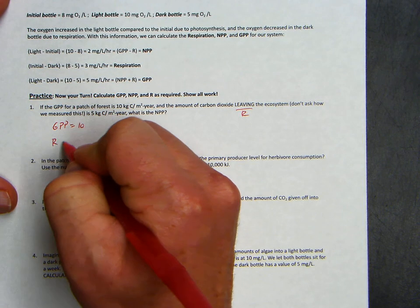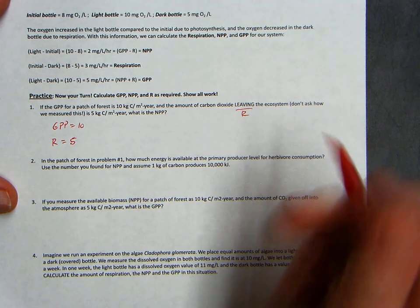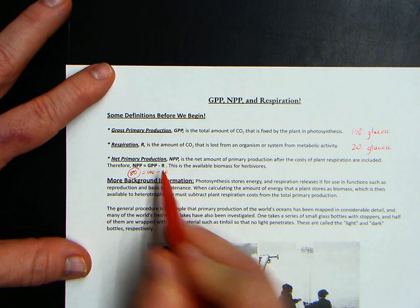Okay, so GPP equals 10. Respiration equals 5. All right, from our equation here on the front, NPP equals GPP minus R.